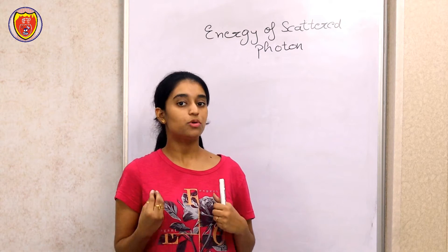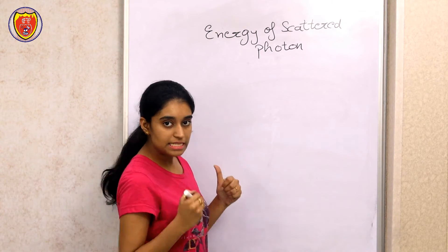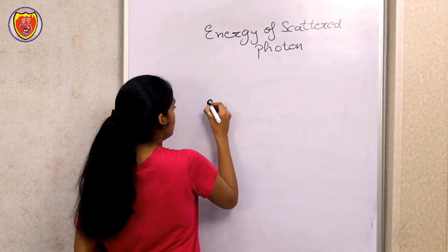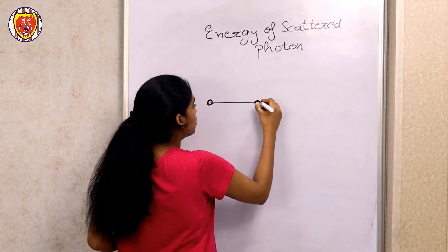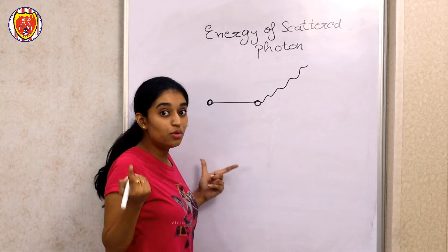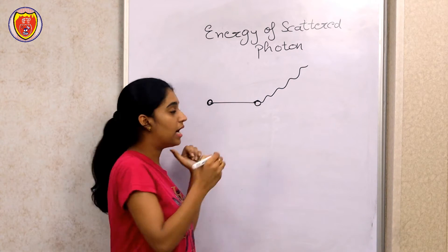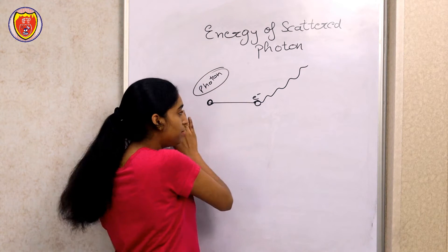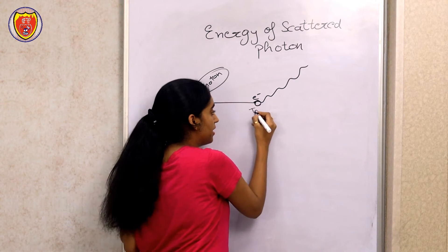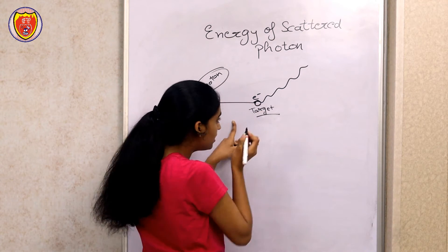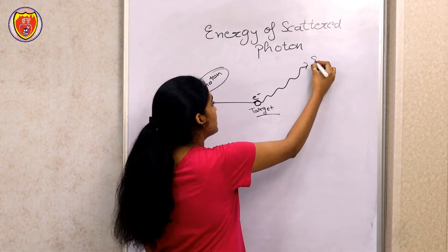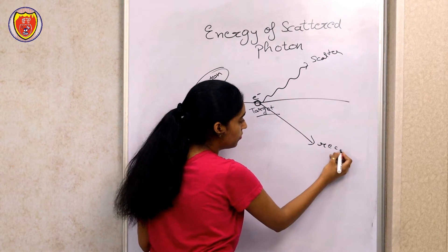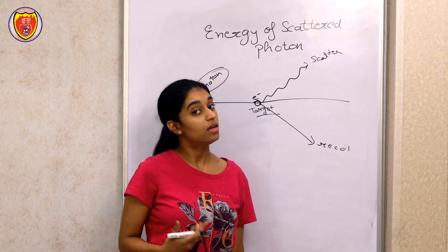You will know, when we had Compton scattering, there was an incident photon and an electron at rest. When the incident photon hit an electron, it scattered. This is the incident photon, here is the photon and here is the electron. This was the electron hit — the target. This was the scattered photon and this was the electron.